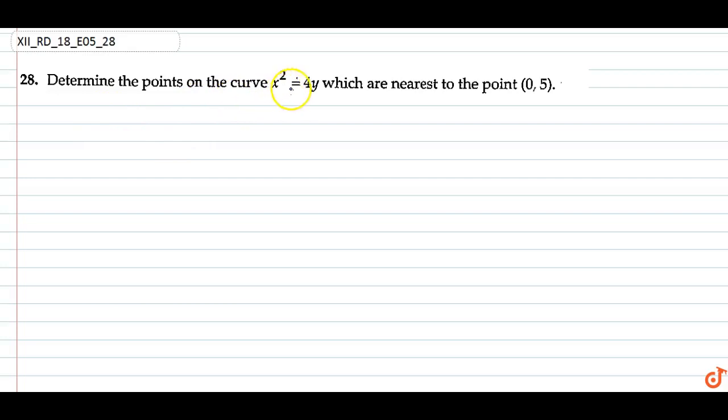In this question we have to determine the points on the curve x² = 4y which are nearest to the point (0, 5). So we take this curve, we take a point (x₁, y₁) on it, and we take this point (0, 5). This is the distance.